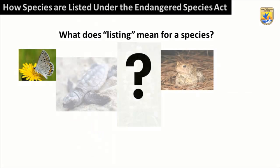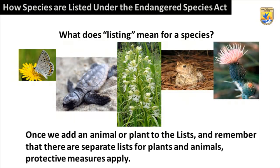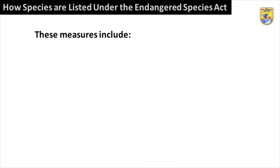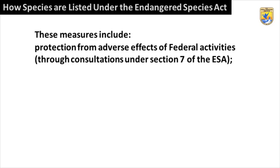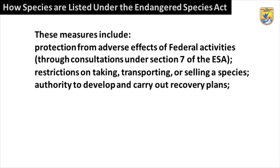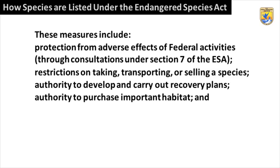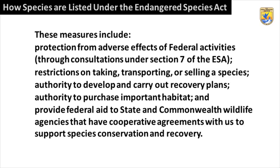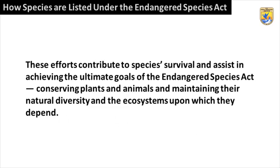What does listing mean for a species? Once we add an animal or plant to the list — and there are separate lists for plants and animals — protective measures apply. These measures include protection from adverse effects of federal activities, restrictions on taking, transporting, or selling a species, authority to develop and carry out recovery plans, authority to purchase important habitat, and provision of federal aid to state and commonwealth wildlife agencies that have cooperative agreements with us to support species conservation and recovery. These efforts contribute to species survival and assist in achieving the ultimate goals of the Endangered Species Act: conserving plants and animals and maintaining their natural diversity in the ecosystems upon which they depend.